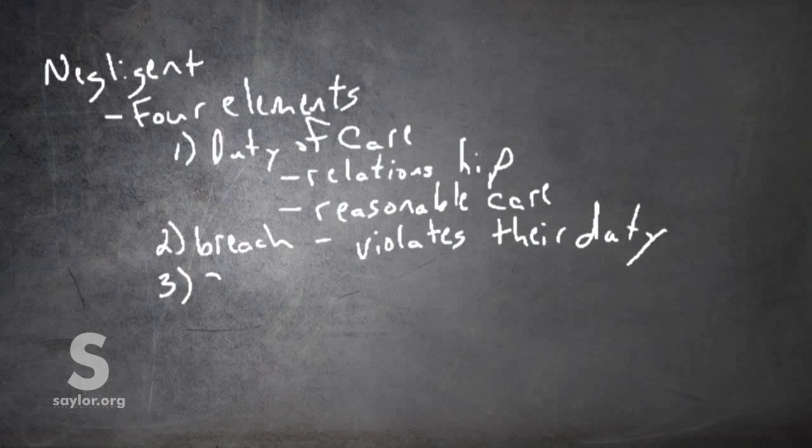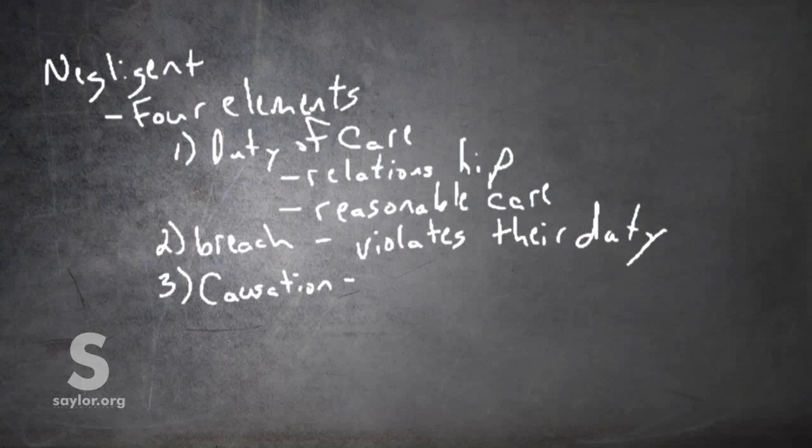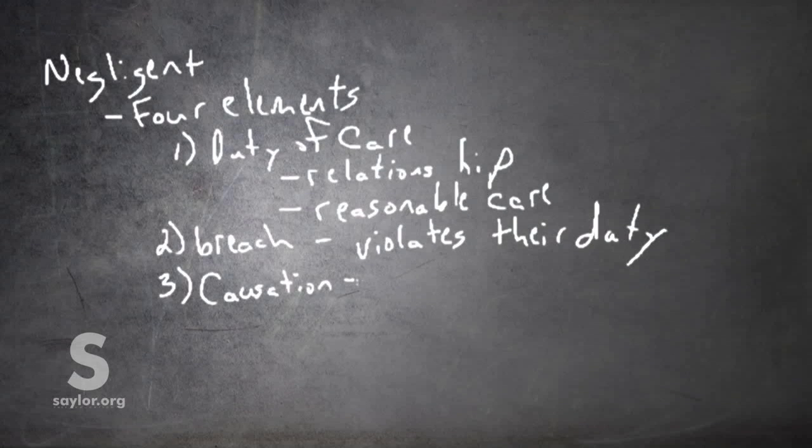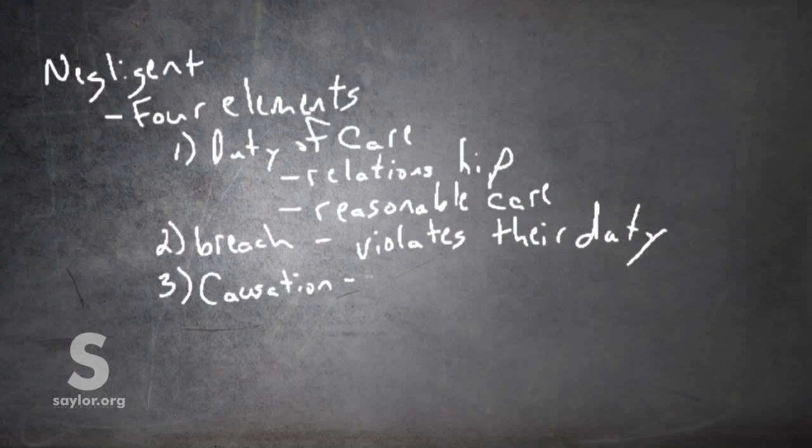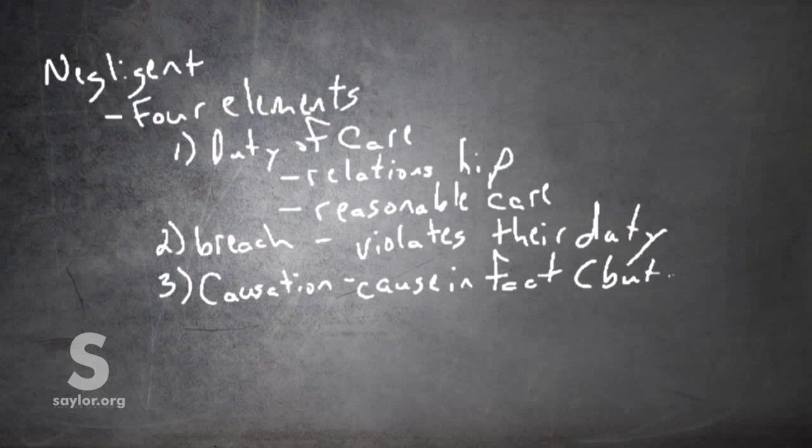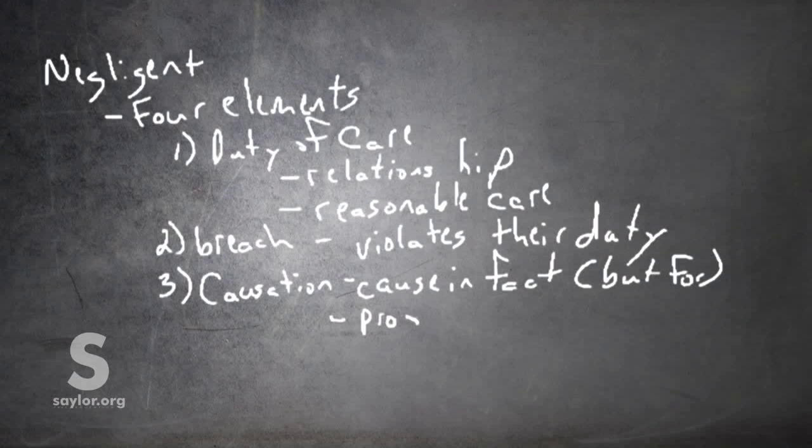Third, there has to be causation. So you have a duty of care, you breach the duty of care. But if there is harm, what you did had to have been the cause of the harm. So you need to show the breach of the duty cause injury to the plaintiff. And there are two types of cause: cause in fact, or but for cause, and proximate cause. And we'll go into that in more depth in this unit.